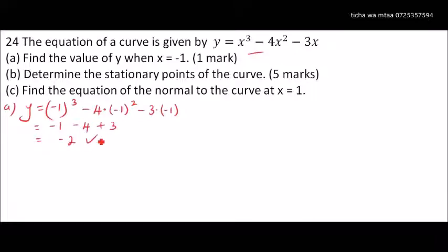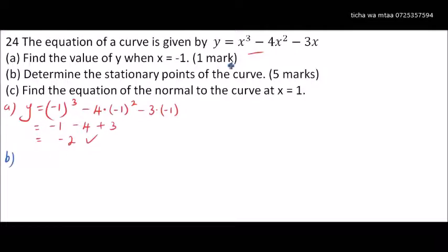So that's part a. Then for part b we determine the stationary points of the curve. We know the gradient function should equal zero at a stationary point, so we need to differentiate. dy/dx = 3x² - 8x - 3.